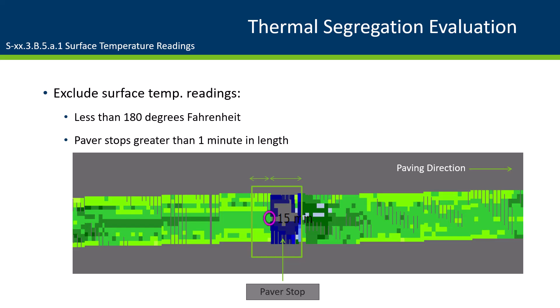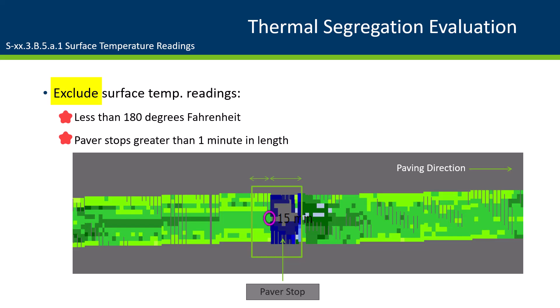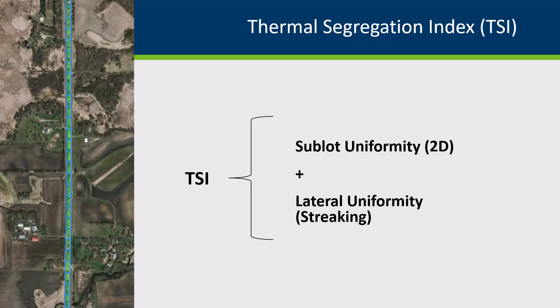When evaluating the surface temperature measurements in beta, exclude temperatures that are less than 180 degrees Fahrenheit and measurements that are within two feet prior to and eight feet after paver stops that are greater than one minute in length. The exclusion of paver stops will be re-evaluated in the future when beta can import smoothness and dielectric data. The Thermal Segregation Index (TSI) is calculated for each data sublot.